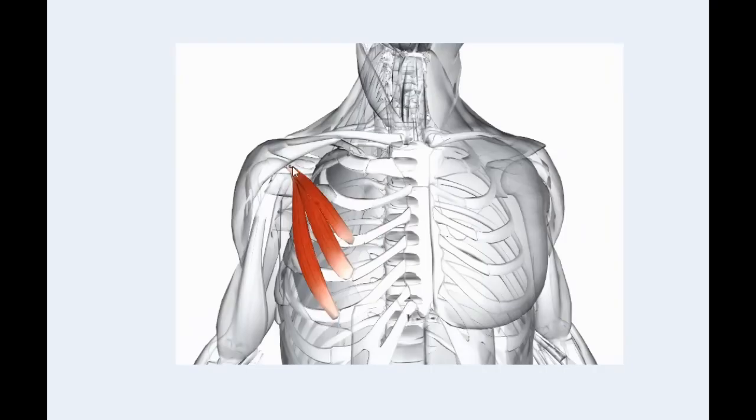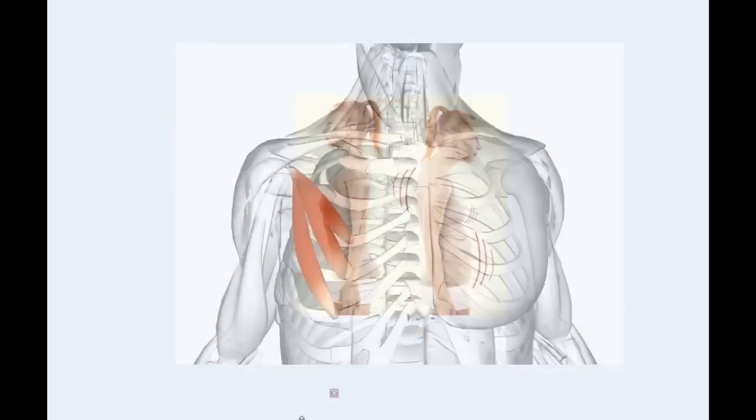Here you can see the pectoralis minor muscle. It attaches to the coracoid process of the scapula right here and to the third, fourth, and fifth ribs. This is the antagonist of the rhomboid muscle. When the rhomboid muscle is weak, the pectoralis minor muscle immediately becomes shortened because it tries to compensate for the weakness of the rhomboid muscle. But this causes a lot of problems because, first of all, there is a neurovascular bundle located under the pectoralis minor muscle. And secondly, it is a respiratory muscle.